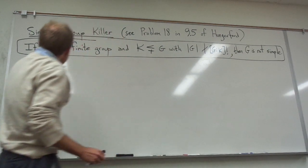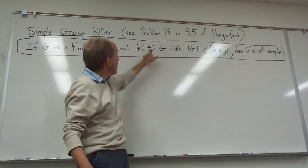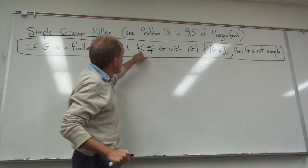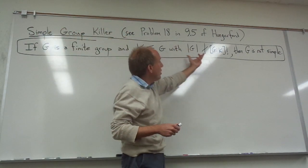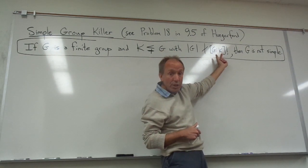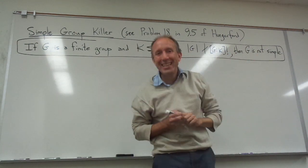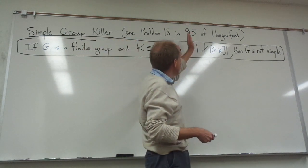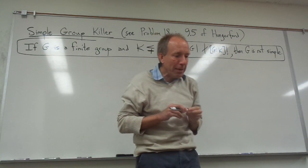What does it say? If G is a finite group and we find a subgroup K that is a proper subgroup of G — notice the slash through the bottom of the subgroup notation indicating proper — and if the size of the group does not divide the index of the subgroup factorial, then G is not simple. If we have a group with a proper subgroup such that the size of the group does not divide this index factorial, then that group cannot be simple.